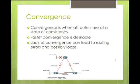Convergence is when all routers are at the same state of consistency — basically, all of their routing tables look very similar, almost identical, with routes to all networks in the topology. The faster convergence happens, the more desirable it is. Lack of convergence can lead to routing errors and possibly loops. RIP and IGRP have slower convergence. If faster convergence is needed, you'll want to use EIGRP or OSPF, which means all routers would have consistent routing knowledge much faster.